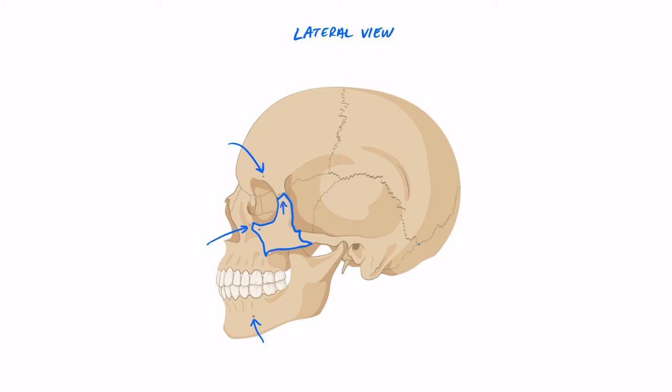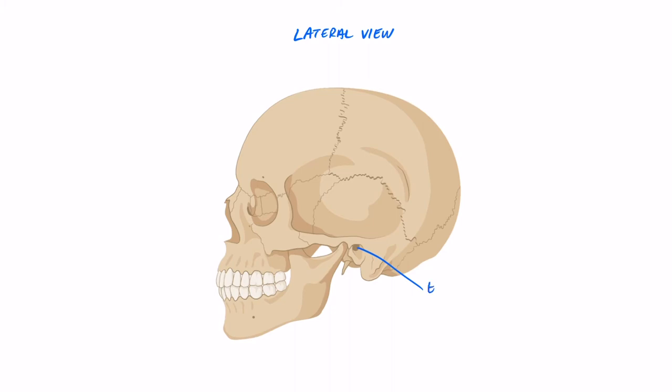Looking at the zygomatic bone here outlined we can see the three processes, just named after the bones that they articulate with, and that'd be the frontal, temporal, and maxillary processes. We can see from this view really nicely the zygomatic arch, and the zygomatic arch is actually formed by the zygomatic and the temporal bone together. So we've got the temporal process of the zygomatic bone and the zygomatic process of the temporal bone forming the zygomatic arch.